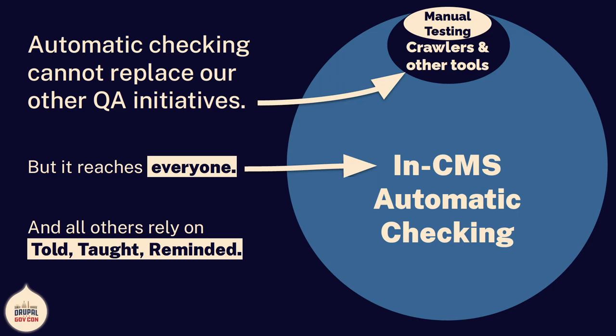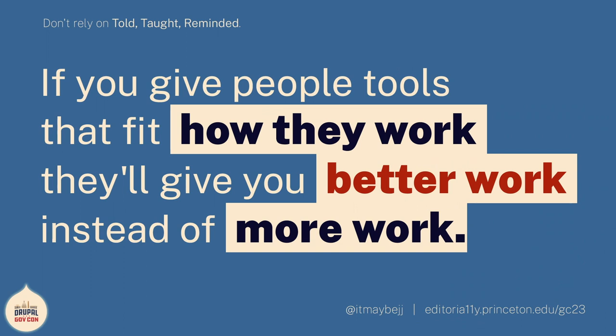Does that replace the rest of our QA processes? Not at all! We have a thousand sites in Dubbot. I manually test about 80 sites a year. But that's only reaching a sliver of our world — we have thousands of university websites. But between Drupal and WordPress, I think 1,500 websites are having at least that one layer of defense. And it drives people to trainings — people show up saying 'I'm here because I keep getting attacked by your checker and I want to know more.' Everything else relies on told, taught, and reminded. So your takeaway: don't rely on told, taught, reminded. If you give people tools that fit how they work, they will give you better work instead of giving you more work.